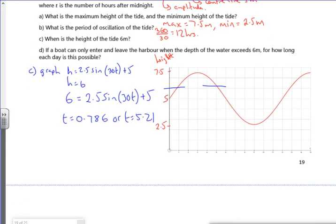Right, now then. Part D says, if a boat can only enter and leave when the depth exceeds 6 metres, how long each day is that possible? So if you look, look on the graph, from this point here to this point here, it's more than 6 metres. So if you imagine you've got your little boat there, and it's got a big keel, and that keel doesn't hit the ground, it's more than 6 metres. That's the idea behind it.